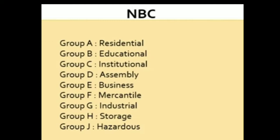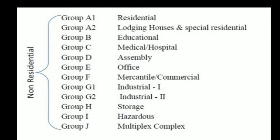As per the National Building Code: Group A is Residential Building, Group B is Educational Building, Group C is Institutional Building, Group D is Assembly Building, Group E is Business Building, Group F is Mercantile Building, Group G is Industrial Building, Group H is Storage Building, and Group J is Hazardous Building.